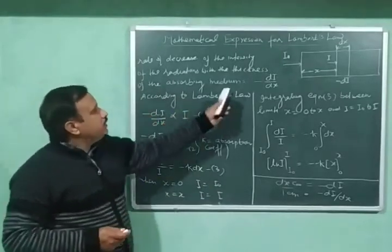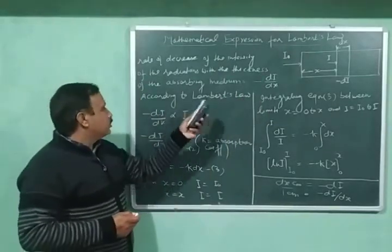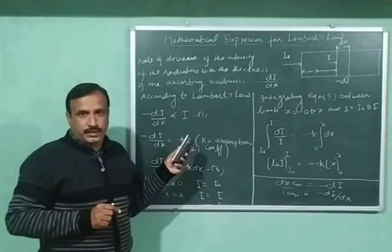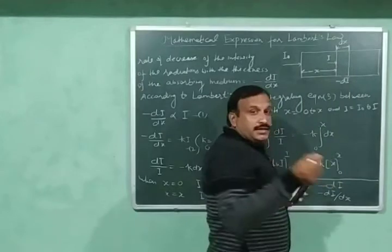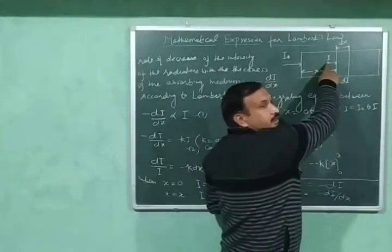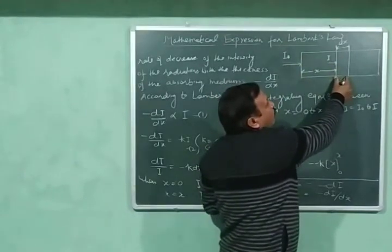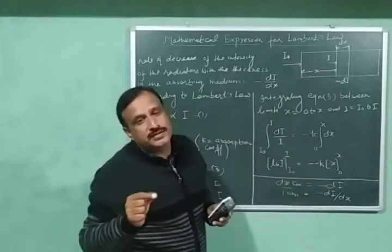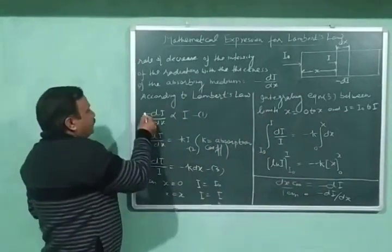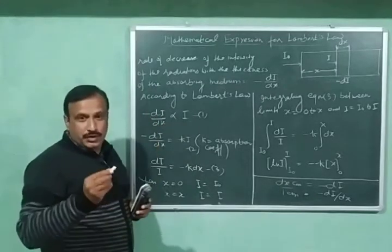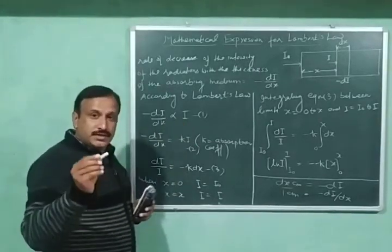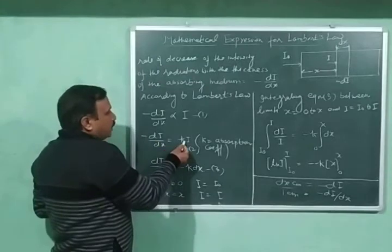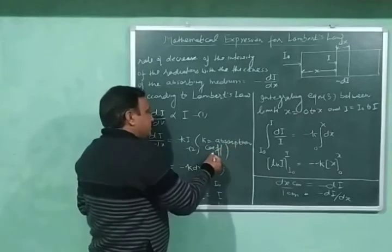So the rate of decrease of intensity is equal to minus dI upon dx. According to Lambert's law, the decrease in intensity is proportional to the intensity of incident radiations. For this small thickness dx, the intensity of incident radiation is equal to I, not I₀, because before entering into this thickness the intensity is I. So minus dI upon dx is proportional to I, according to Lambert's law — this is equation number one. This equation will be further written as minus dI upon dx equals kI, where k is a proportionality constant also called the absorption coefficient — this is equation number two.